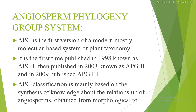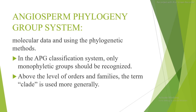The Angiosperm Phylogeny Group system, also called APG, is the first variant of a modern, mostly molecular-based system of plant taxonomy. It was first published in 1998 as APG1, then in 2003 as APG2, and in 2009 as APG3. APG classification is mainly based on the synthesis of knowledge about the relationships of angiosperms obtained from morphological to molecular data using phylogenetic methods.